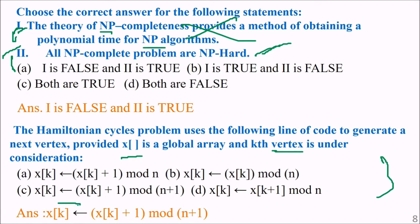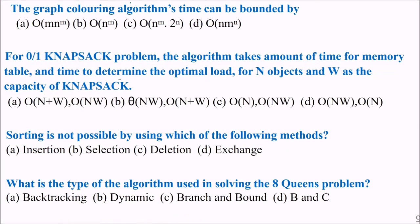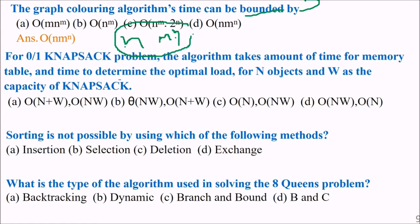Next is the graph coloring algorithm — the time can be bounded by order of n·m to the power n, where n is the number of nodes and m is the chromatic number. If you are familiar with graph coloring, you will understand what n and m represent here.